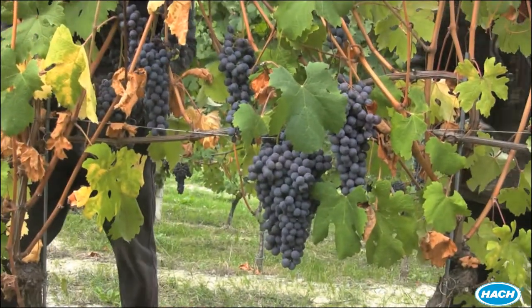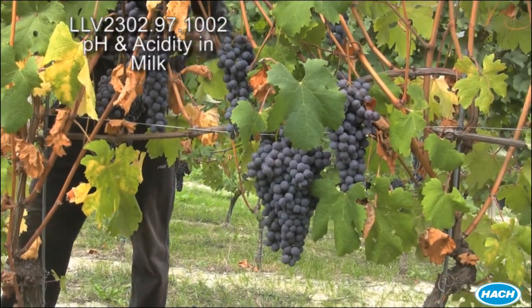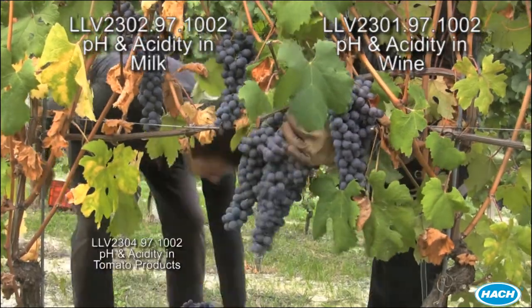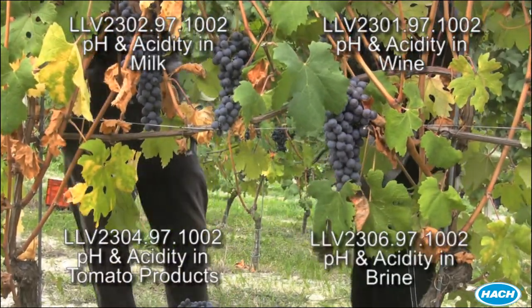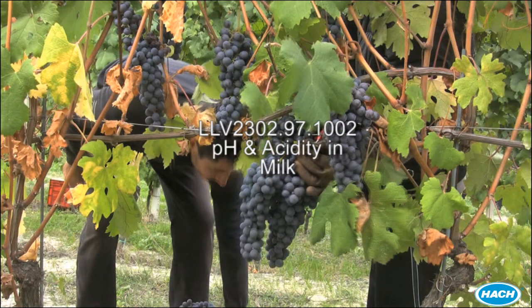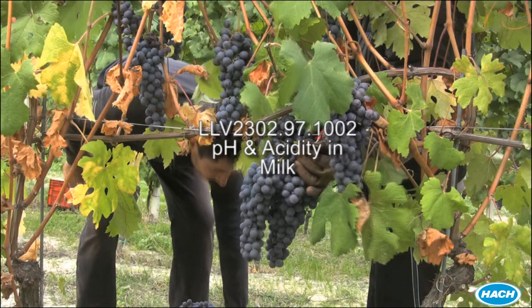Hach's Titrolab for pH and total acidity is available in four different sales versions: dairy products, wine, tomato sauce and tomato products, and brine. Our demonstration today will specifically be using the pH and acidity in milk instrument.